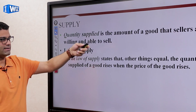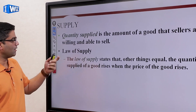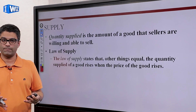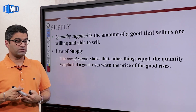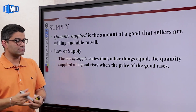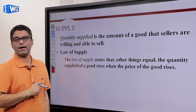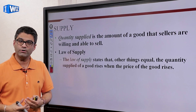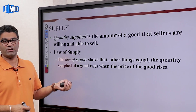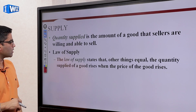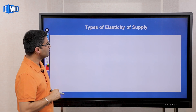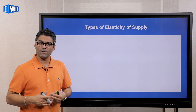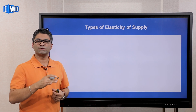Quantity supplied is the amount that sellers are willing to sell at a given price, and the law of supply states there's a positive relationship. Price elasticity of supply tells us how severely a producer is going to react when price changes.